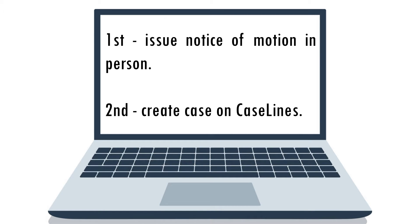Once you have drafted a notice of motion and founding affidavit — in other words, an application — you will need to attend court in person to issue same. After the registrar has issued the application, it's time to create a case on CaseLines. I will go through this process briefly with you now, but for a detailed explanation on how to create cases and upload documents, check out the previous CaseLines episode.